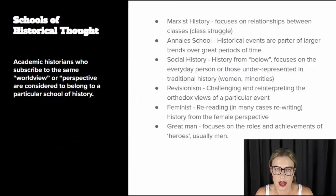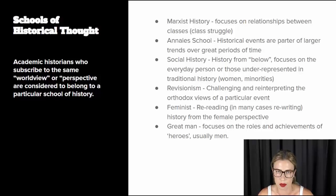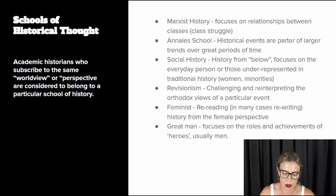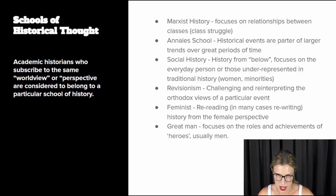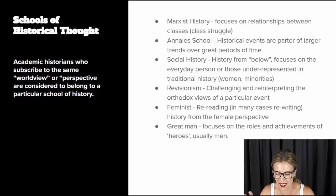When we're examining historiography, it's basically studying the history of histories. What we do is examine what school of historical thought the historian is bringing with them. We can classify academic historians by the world view or perspective that they generally bring to their work, and they're considered to belong to a particular school of history. It's not that these places exist as institutions — it's just called a school of historical thought; there's not an actual school that they go through.